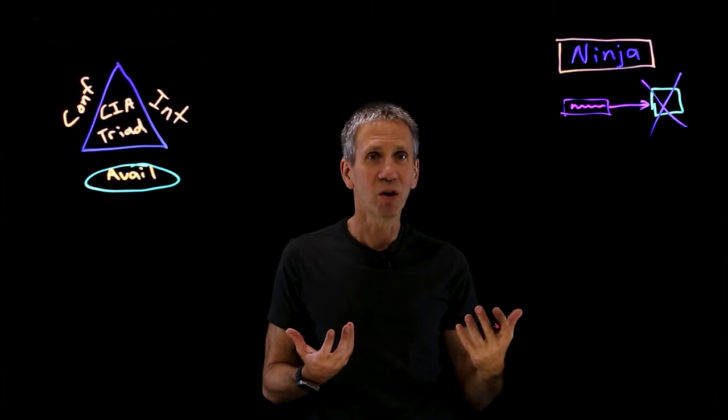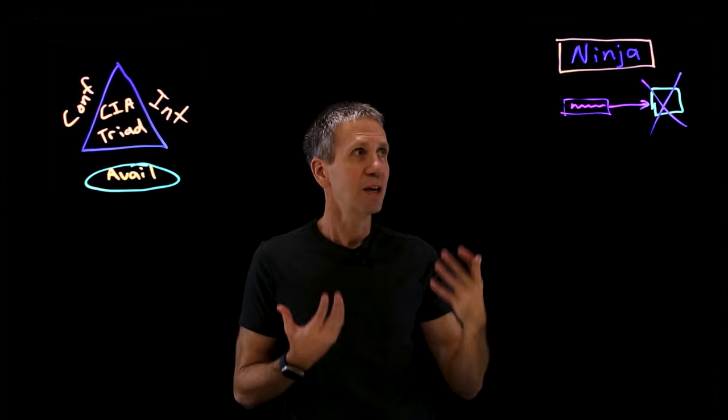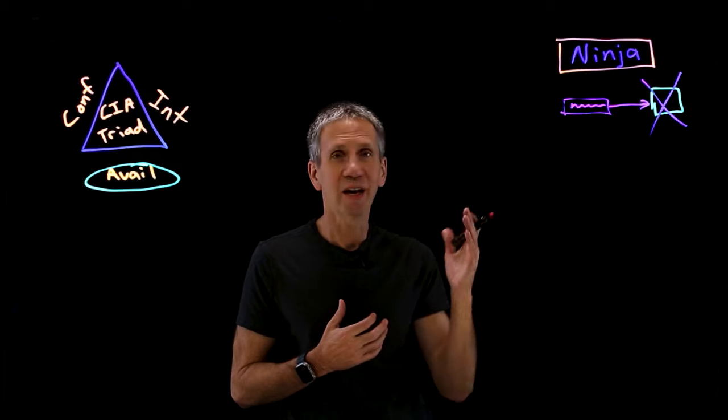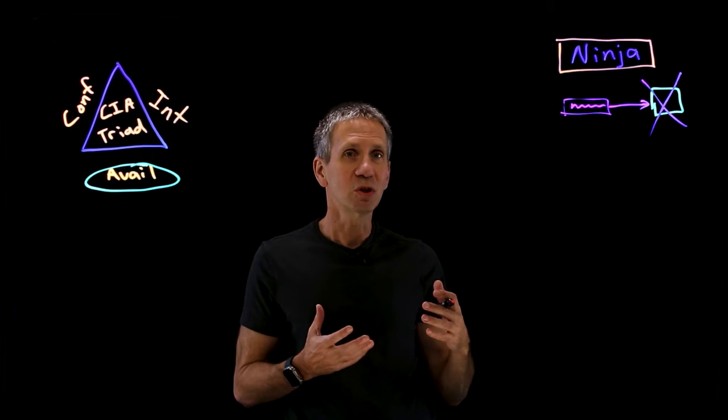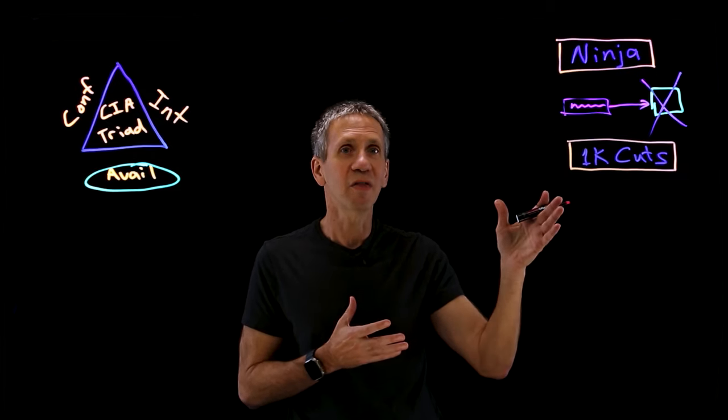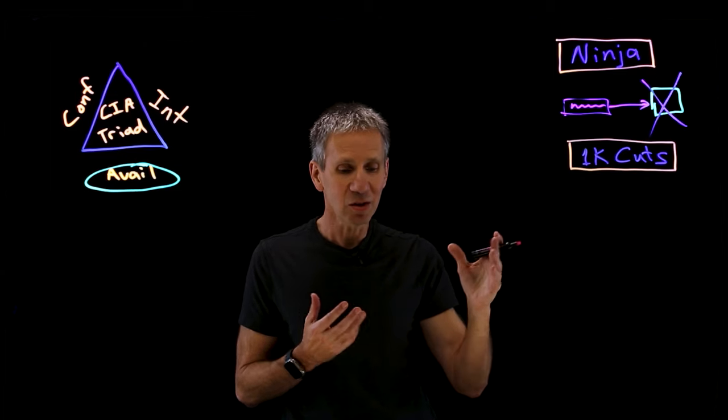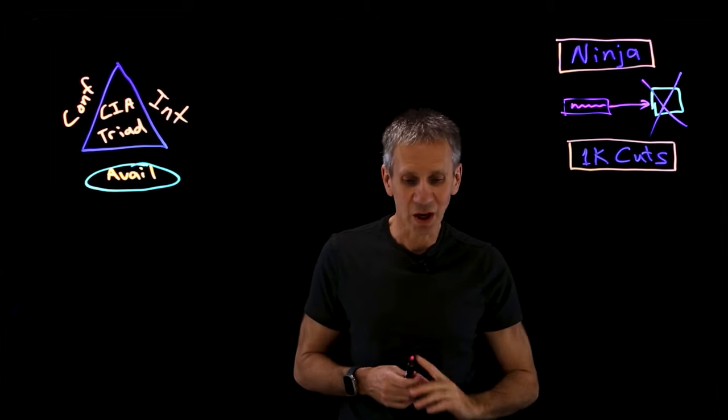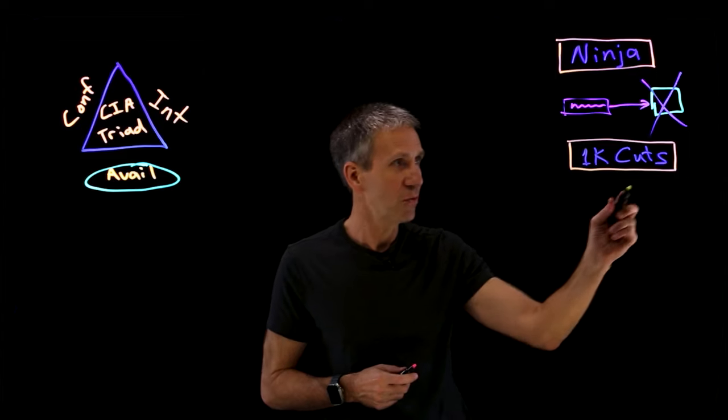That's a type of denial of service that not a lot of people think about. They generally think about overwhelming with more volume. And we'll talk about that. That's the next type I'll refer to, which is what I'll call the death by a thousand cuts type of attack. In these attacks, and there's a number of different types that can happen here.